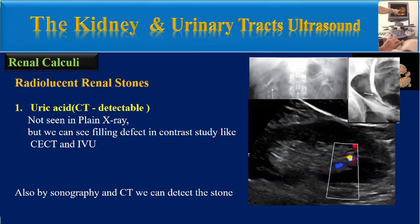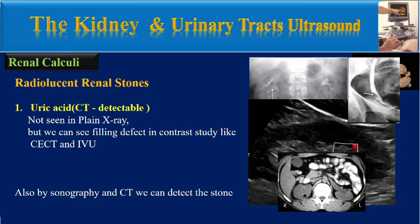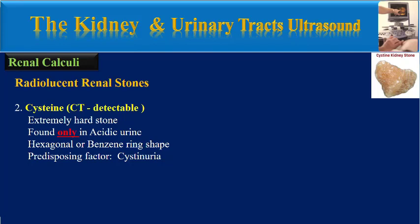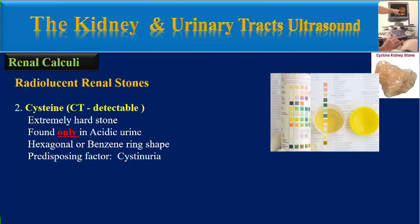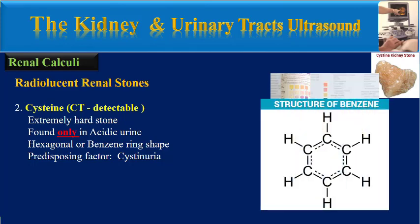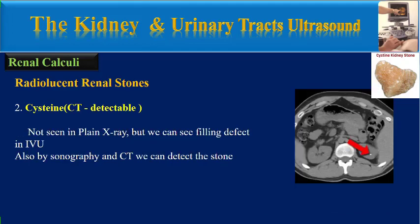Uric acid stones are not seen in plain radiography but can be fully depicted in contrast studies like contrast cystography and intravenous ureterography. By sonography and CT we can also detect the stone. The next radiolucent CT detectable stones are cysteine stones. They are extremely hard stones found only in acidic urine, with a hexagonal or benzene ring shape, and the predisposing factor is cystinuria. Like uric acid stones, they are not seen in plain radiography but can be seen as filling defects in intravenous ureterography, and by sonography and CT we can detect the stone.